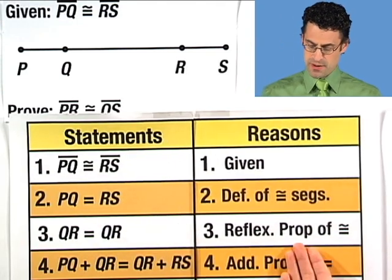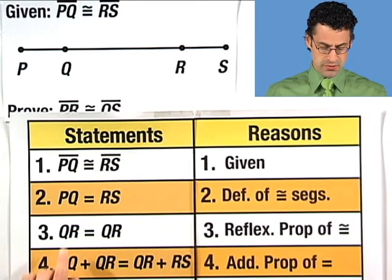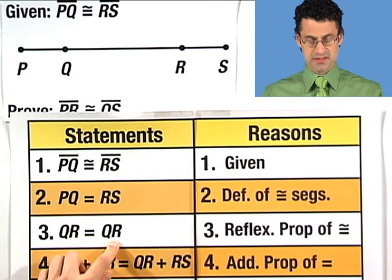Next, by the reflexive property of congruence, we conclude that the length QR is equal to the length of itself, QR.